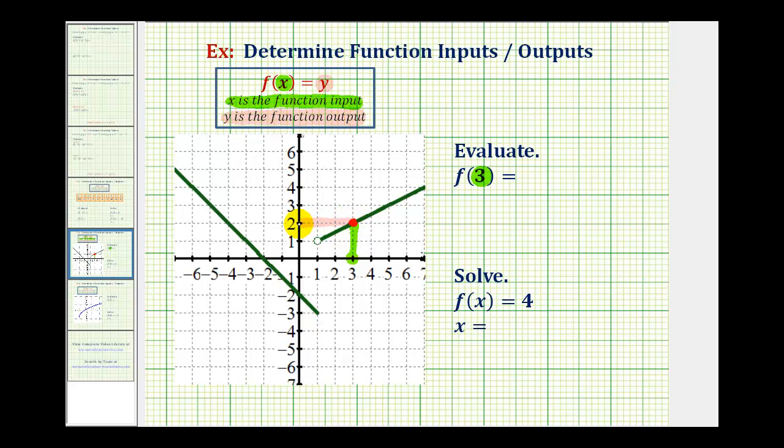So the y value is positive two, therefore our function value is positive two. Also notice that f of three equals two represents the point on the function with coordinates three comma two.